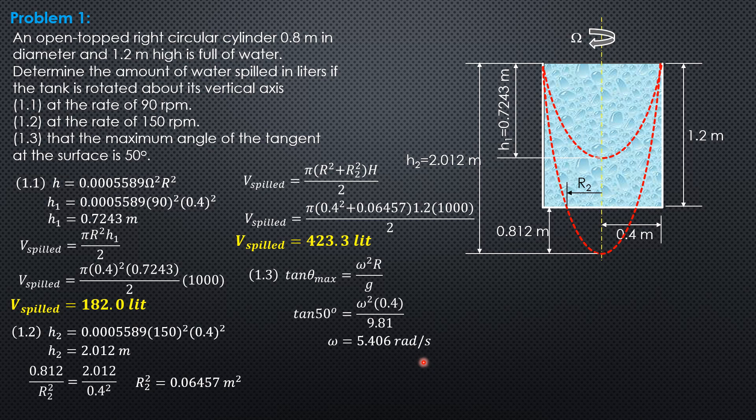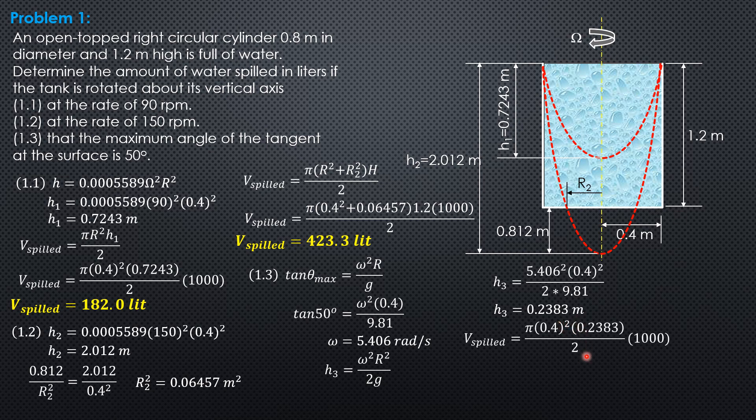And this corresponds to a height of omega square R square over 2G. So 5.406 square times 0.4 square divided by 2 times 9.81. So H3 is 0.2383. So meaning to say it is less than 1.2. It looks the same as H1. So the volume spilled would be paraboloid with one base. So volume spilled is pi over 2 times 0.4 square times 0.2383 times 1,000. So volume spilled is equal to 59.89 liters.